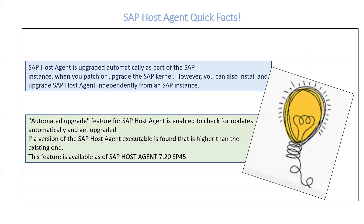The host profile file is contained within the executables of the host agent. SAP Host Agent is upgraded automatically as part of the SAP instance when you patch or upgrade the SAP kernel. However, you can also install and upgrade SAP Host Agent independently from an SAP instance. There is a feature called the automated upgrade feature for SAP Host Agent, which is present as of SAP Host Agent 7.20 SP45. This feature enables checking for updates automatically and upgrades if a version of the SAP Host Agent executable is found which is higher than the existing one.